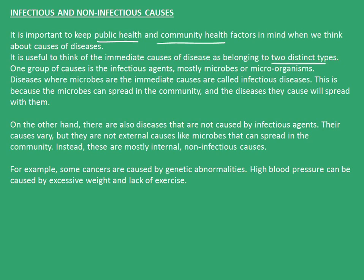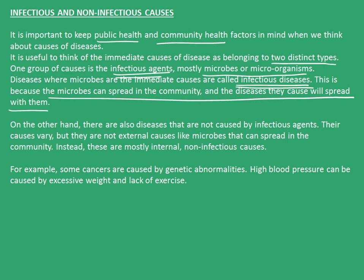The immediate causes of diseases can be distinguished into two distinct types. One group of causes is the infectious agents, mostly microbes or microorganisms. Diseases where microbes are the immediate causes are called infectious diseases, because the microbes can spread in the community and the diseases they cause will spread with them. On the other hand, there are also diseases that are not caused by infectious agents — these are mostly internal non-infectious causes.